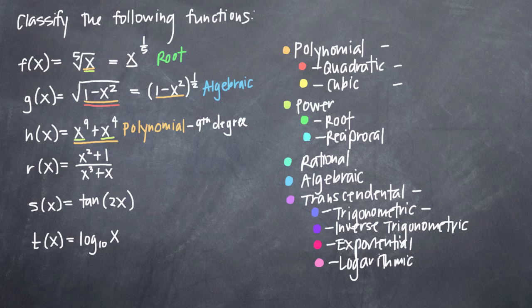For r of x, you can see that we have a couple power functions, x squared and x cubed, even x to the first here are power functions. You can also see that we have a polynomial function in our numerator and a polynomial function in our denominator. But when we put this all together, we know that we have a rational function because a rational function is just a ratio or a fraction of two polynomials. So whenever you see a polynomial in your numerator and a polynomial in your denominator, you know that you have a rational function.